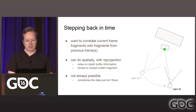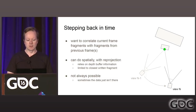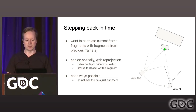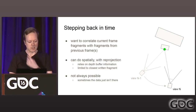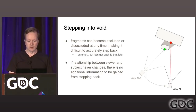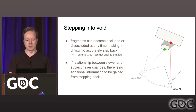To step back in time, we want to make a correlation between current frame fragments and fragments in previous frames. We can do this spatially with a reprojection. Reprojection is a known technique — it relies on depth buffer information, so it's limited to the closest written fragment. But it's not always possible. Sometimes the data just isn't there — for example, when we have occlusion. We see a fragment that's just not in our history. We can do a reprojection, but we'll see a different surface from the previous perspective, and if we blend those together, that's a false reprojection.